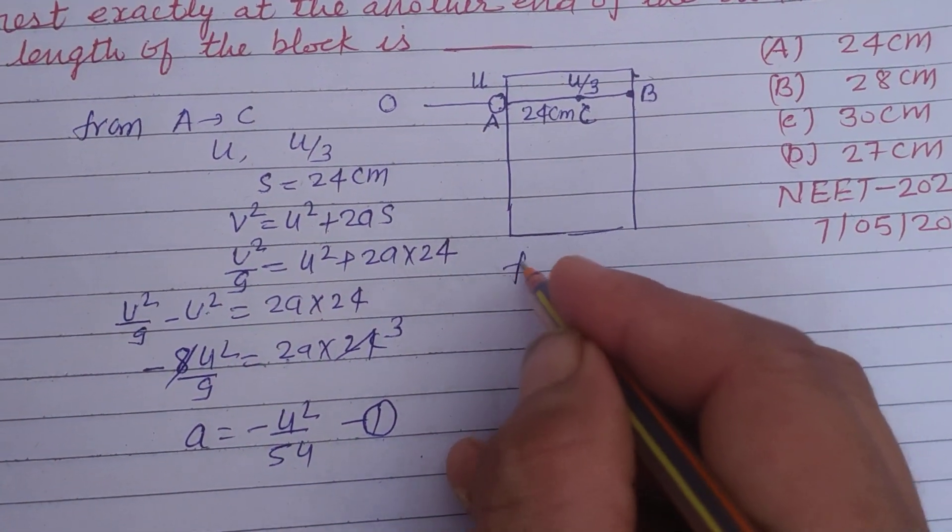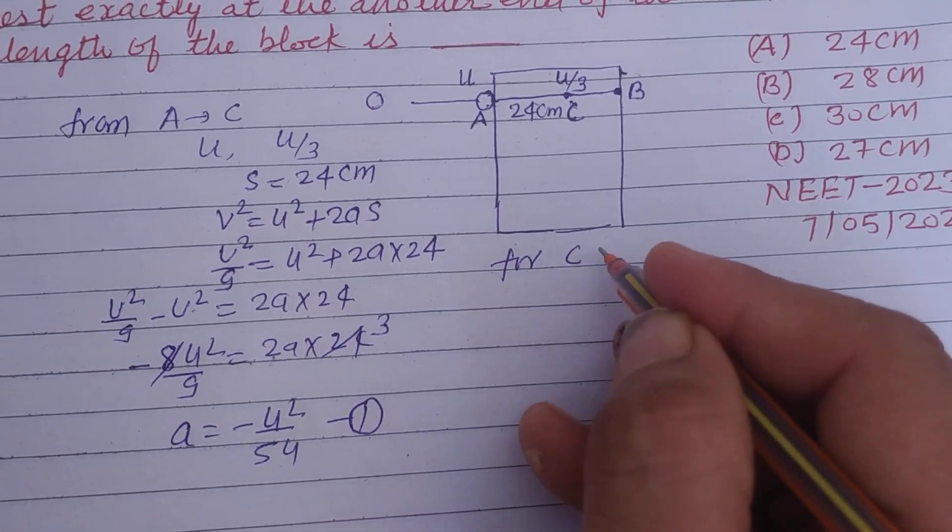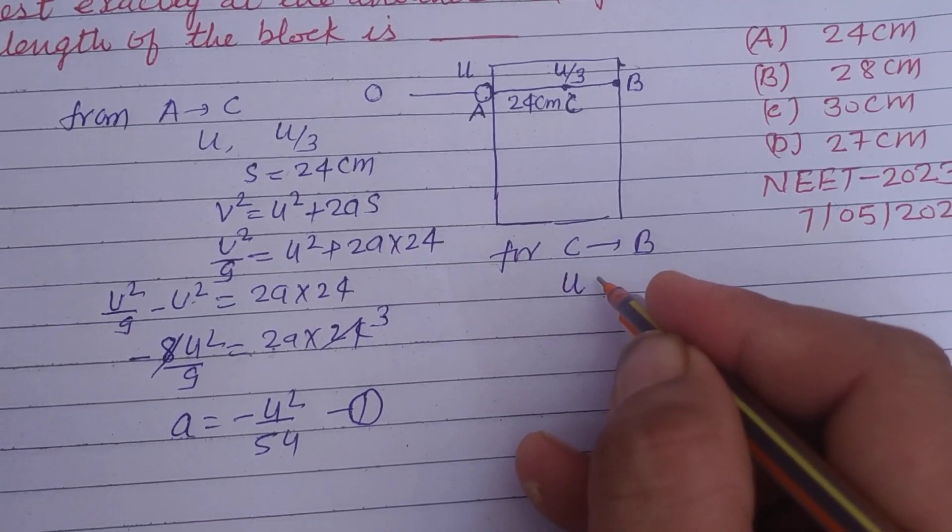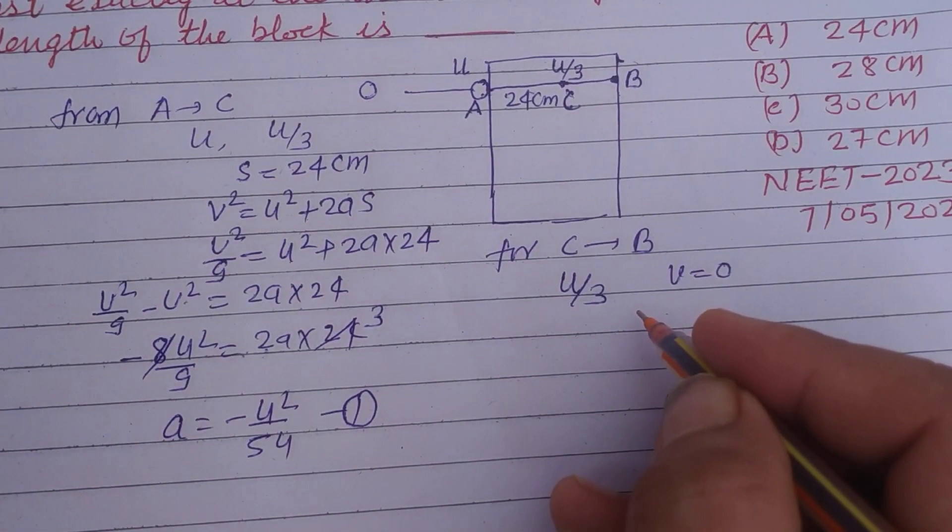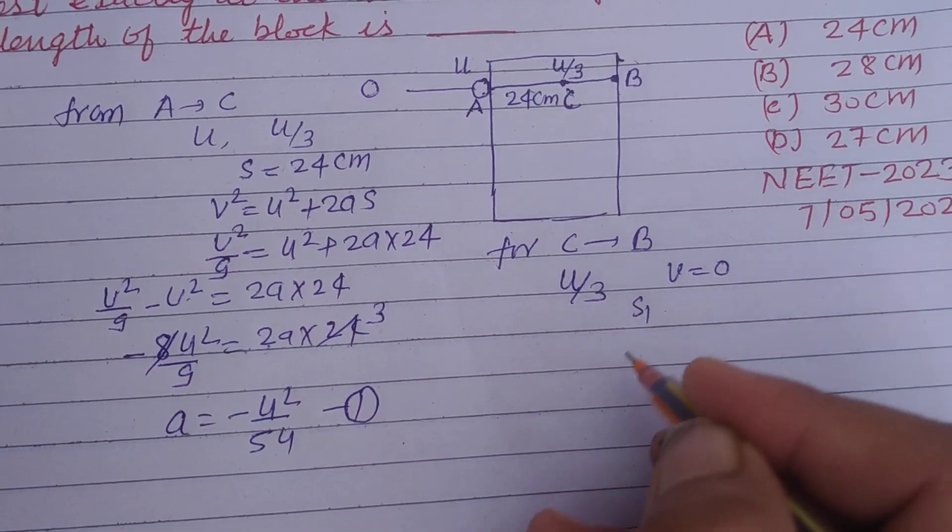For motion of C to B, initial velocity is U by 3, final velocity is 0, and distance is S1.